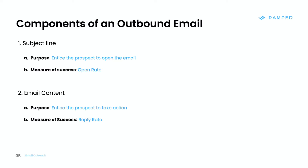Let's begin with the two components of an email. The first is a subject line. This is the first thing anybody sees when you email them — it's the first thing that pops up in your inbox next to the name of the sender. The purpose of the subject line is to prompt the reader to open your email. You want to keep your subject line short and enticing.